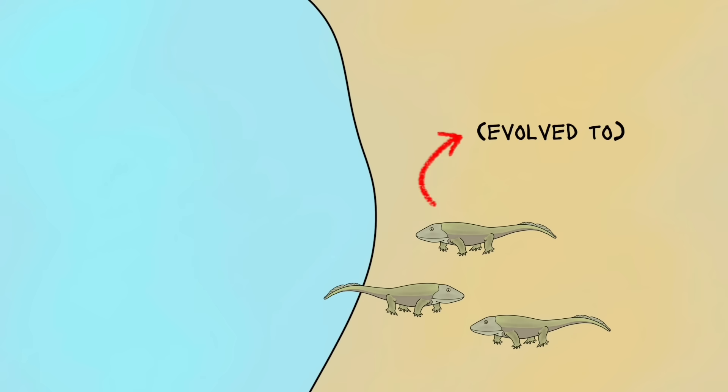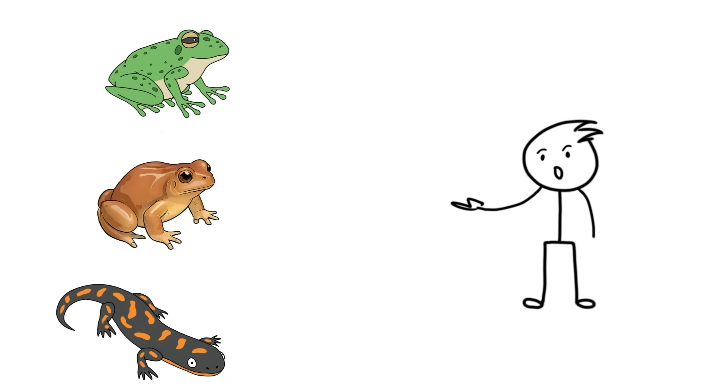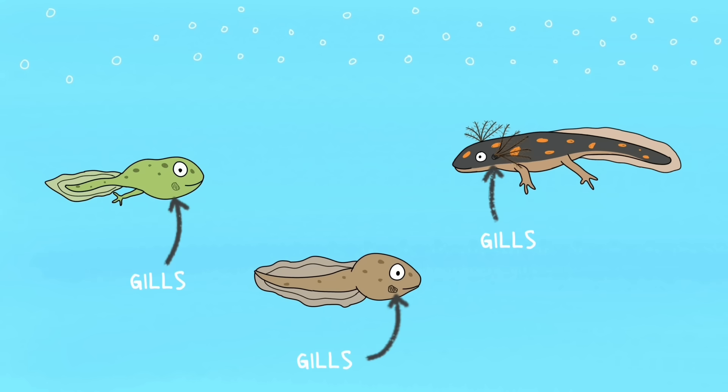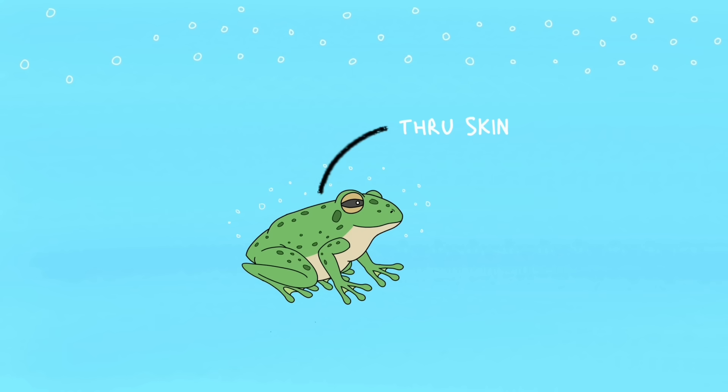Later, the water guys evolved to frogs, toads, salamanders, and others. The one common thing about all amphibians was that their kids have gills to breathe underwater. The adults have lungs for land, and breathe through their skin in water.